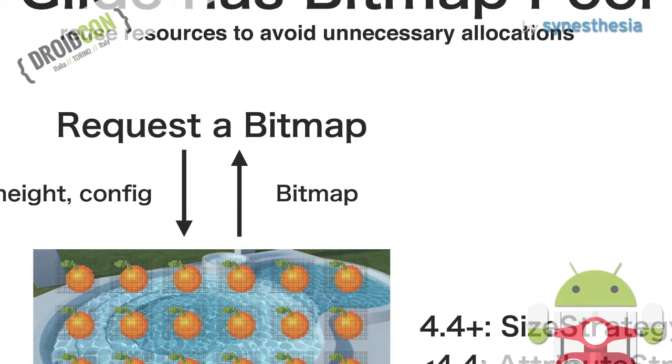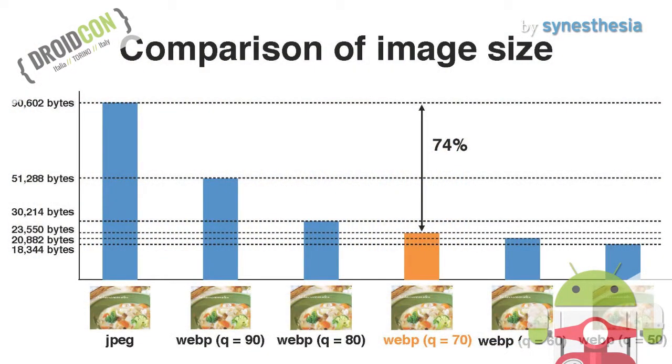Next, image format. We are using WebP, an image format developed by Google. WebP lossless images are 26% smaller in size compared to PNG images, and WebP lossy images are 25% to 34% smaller compared to JPEG images. Comparing image sizes, 70% quality WebP is the most efficient in our service, so we are distributing images at 70% quality WebP by default.